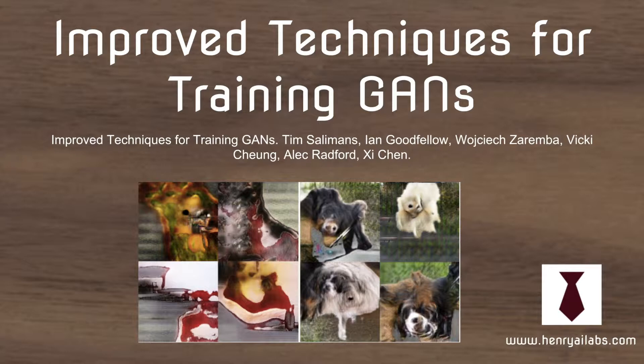This is Paper Summaries with Henry AI Labs. This video is covering improved techniques for training GANs. The cover slide shows the difference between the original DCGAN model and the DCGAN model using the heuristics proposed in this paper.